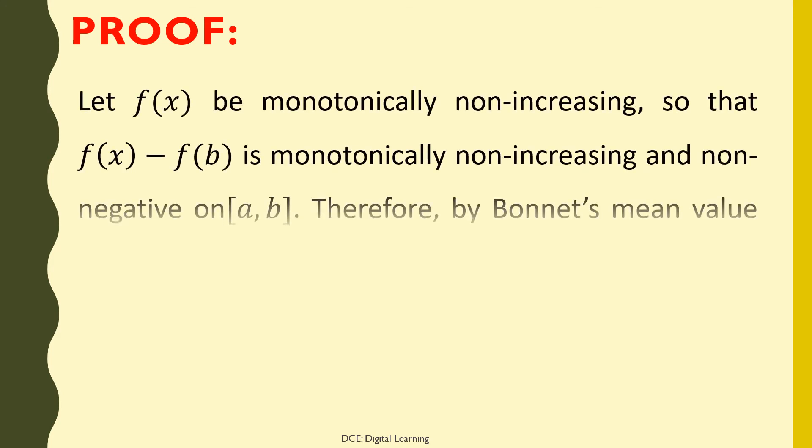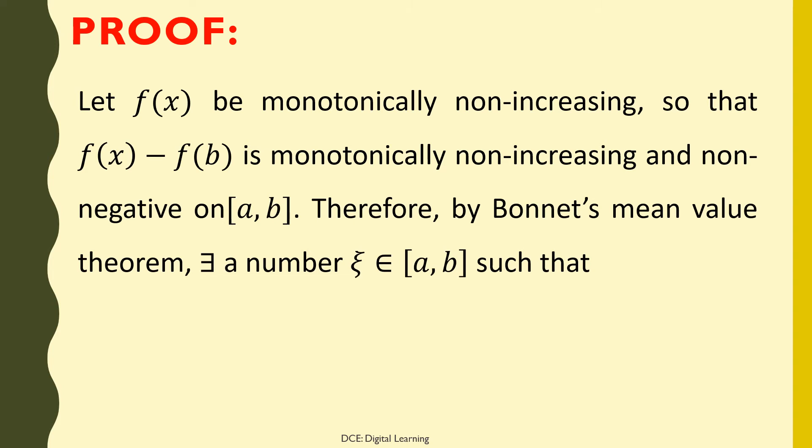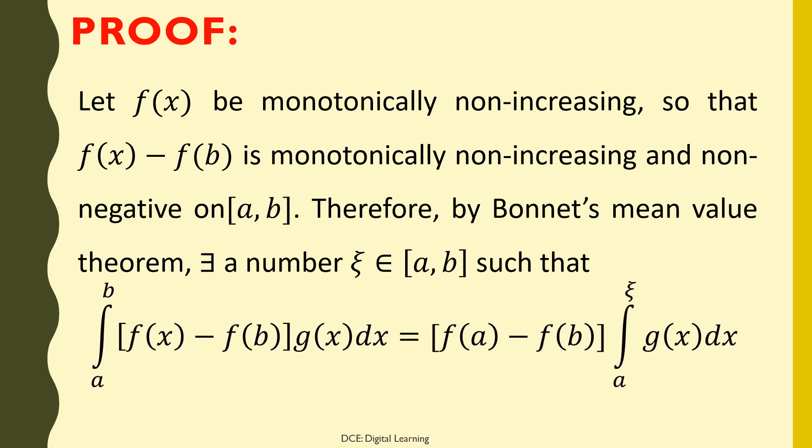Proof: Let f(x) be monotonically non-increasing, so that f(x) − f(b) is monotonically non-increasing and non-negative on the closed interval [a, b]. Therefore, by Bonnet's Mean Value Theorem, there exists a number ξ belonging to the closed interval [a, b] such that the integral of [f(x) − f(b)]·g(x) dx from a to b equals [f(a) − f(b)] times the integral of g(x) dx from a to ξ.